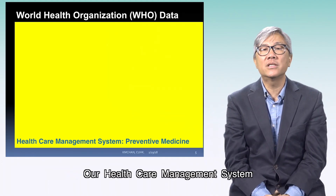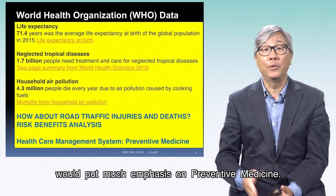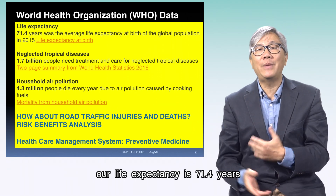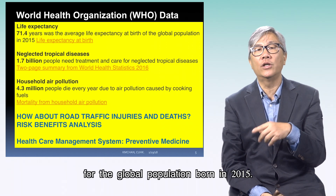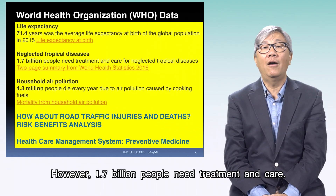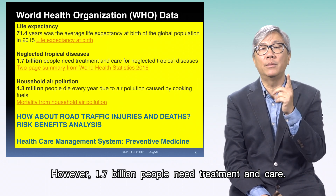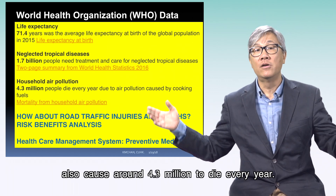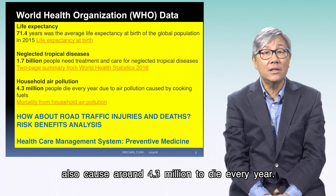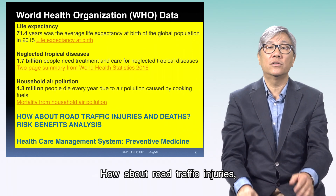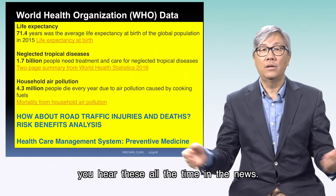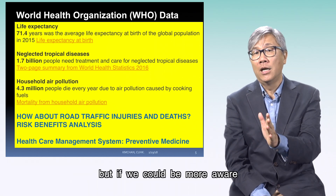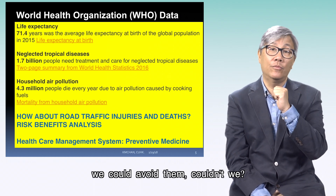Our healthcare management system would put much emphasis on preventive medicine. Data from WHO showing our life expectancy is 71.4 years for the global population born in 2015. However, 1.7 billion people need treatment and care. Household air pollution from cooking fuels also causes around 4.3 million deaths every year. How about road traffic injuries? If we could be more aware, we could avoid them, couldn't we?